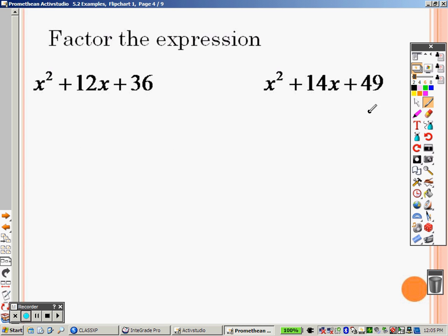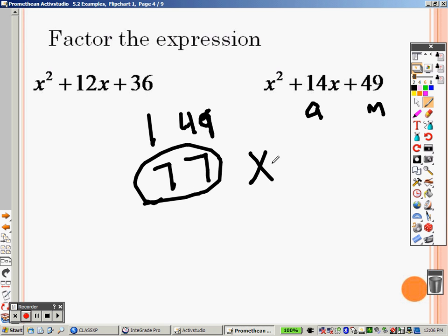Over here, what multiplies to give you 49 that adds to give you 14? Well, you got 1 and 49, and the only thing I can think of is 7 and 7. Well, guess what? 7 plus 7 is... Bingo! So when we're doing this, the first one is x plus 7, and the second one is x plus 7.